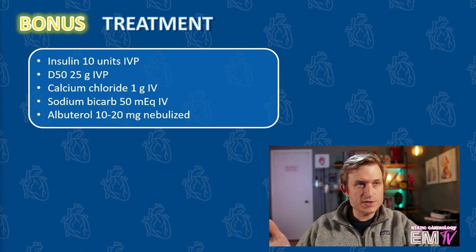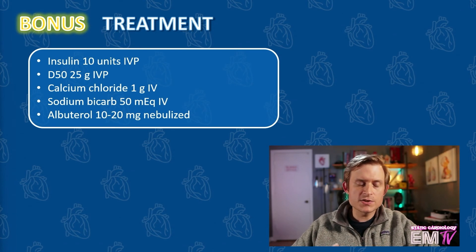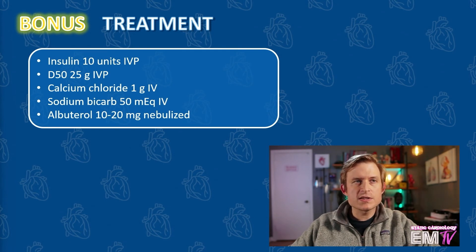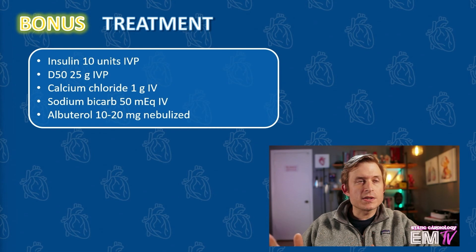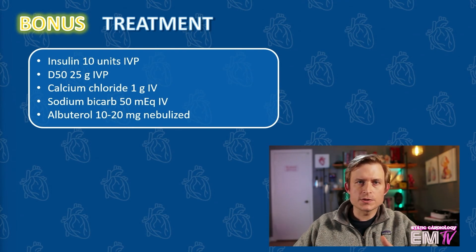The only thing we're missing here is diuresis — or removal of potassium from the body. If this patient had functioning kidneys, we would rely on things like Lasix, furosemide, or even K-exalate. But because this patient is end-stage renal, the only way to remove the potassium from the body at this point would be to perform hemodialysis. That would be the most definitive removal option for this patient.